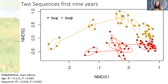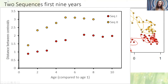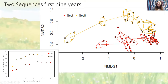As a reminder, sequence one was installed in an average year and sequence two was installed in a drought year. If we graph the distances from age one to each subsequent year, with distance between centroids on the y-axis, you can see that the communities change until around year six or seven and then remain relatively stable from that point on. After that point, communities in each sequence have little variation around their respective ordination spaces.